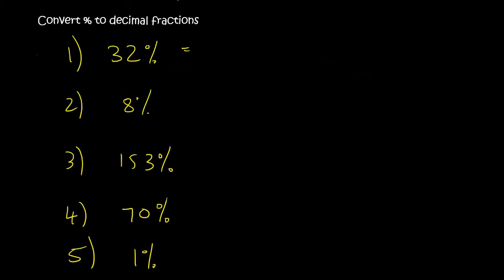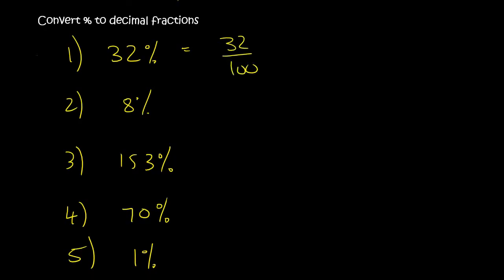So now let's practice. 32%: step one, write it over 100 because then the percentage sign is gone. Then we realize that there are two zeros, so we move the decimal place twice, and so you end up with comma 32. And so you just add a zero in the front.